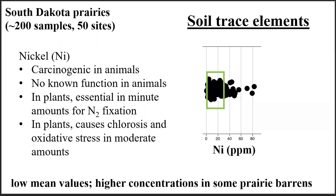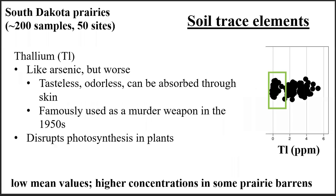Kind of like selenium, nickel is poisonous in moderate amounts, causing chlorosis and oxidative stress in plants and cancer in animals, but plants need it in small amounts to facilitate nitrogen fixation. Like arsenic, thallium is one of the heavy hitters on this list. Selenium, cadmium, and nickel will cause a lot of damage over time, but thallium will just straight up kill you. It made an even better murder weapon than arsenic because it takes less of it to cause similar symptoms — i.e., death — but doesn't have a distinctive taste or smell like arsenic does. It also disrupts photosynthesis in plants.